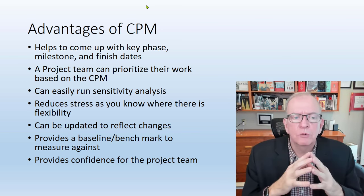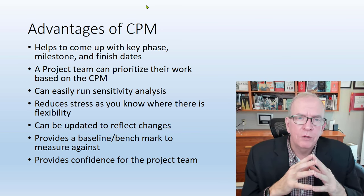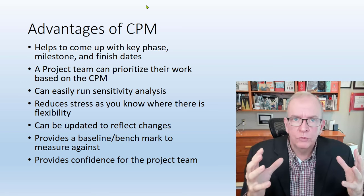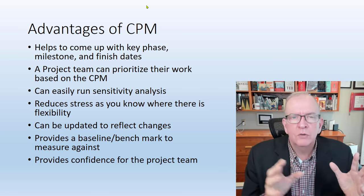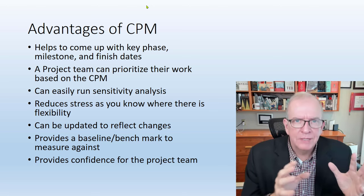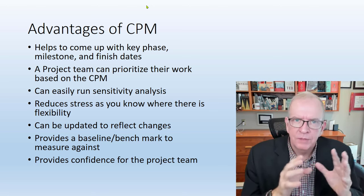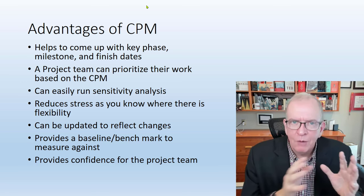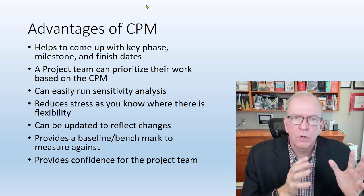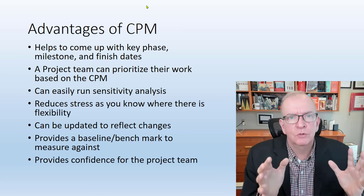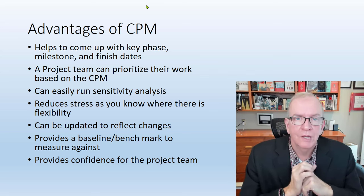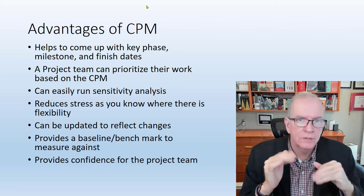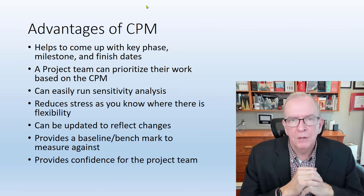A project team can prioritize their work based on the CPM. That simply means if you know which activities are critical and which are not, and you've got limited time — if something is going a little out of whack on a non-critical activity, you're not going to pay as much attention to that as if something on the critical path is going out of whack. Because that one is certainly going to delay your project, whereas the other won't delay your project until it becomes critical. That also helps to reduce your stress level, because not everything is critical on your project.